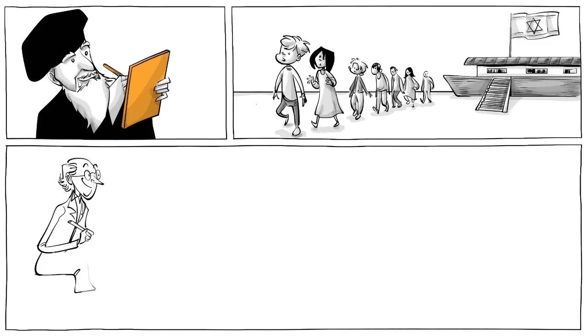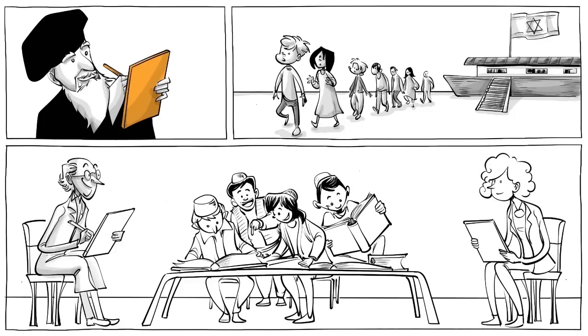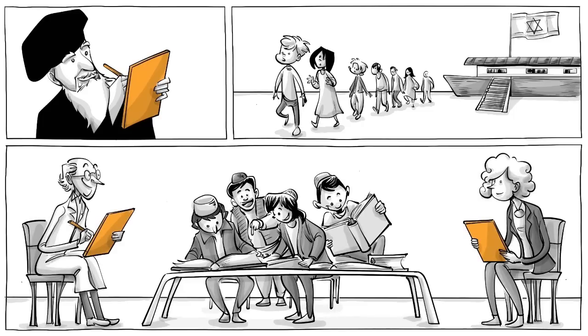To determine their school placement, the children were subjected to a series of assessments, including IQ tests. During the assessments, Feuerstein noticed that while some children learned a new task very easily, others didn't.